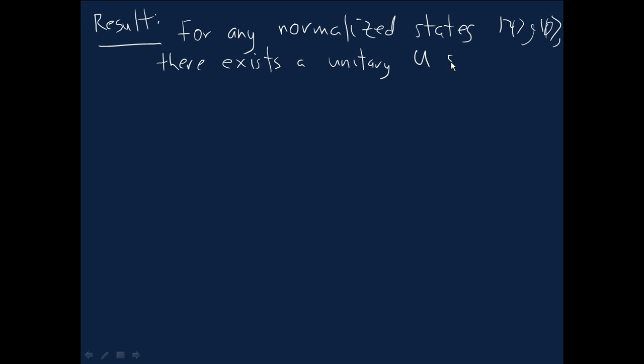Well, what we're going to discuss in this video is a result that shows that for any two normalized states, there's always possible to find a unitary connecting them. So let me just state that a little bit more formally. For any normalized states psi and phi, there always exists a unitary which we'll call u such that u acting on psi gives us phi as the output.